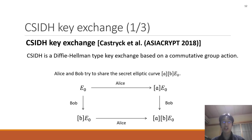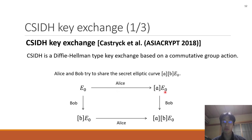CSIDH is a Diffie-Hellman type key exchange based on a commutative group action. First, Alice takes a group element R and computes its action on elliptic curve E0, and she computes R*E0. And Bob computes B*E0. And they exchange these elliptic curves.